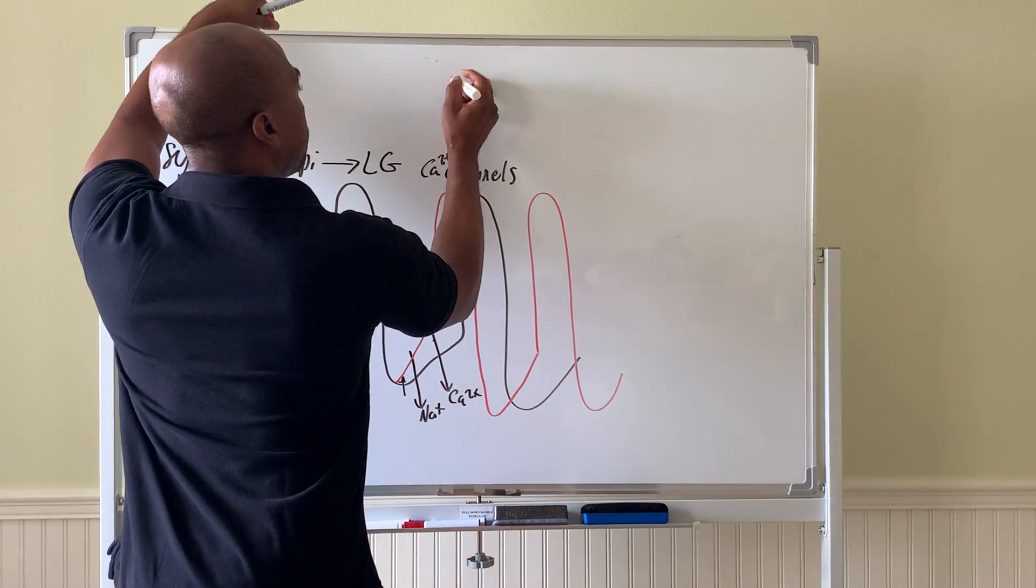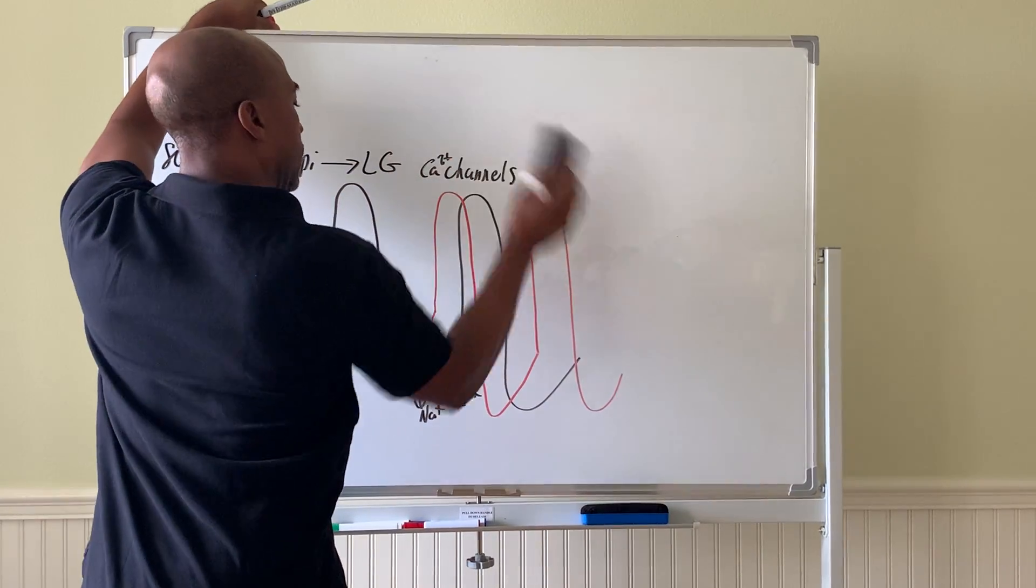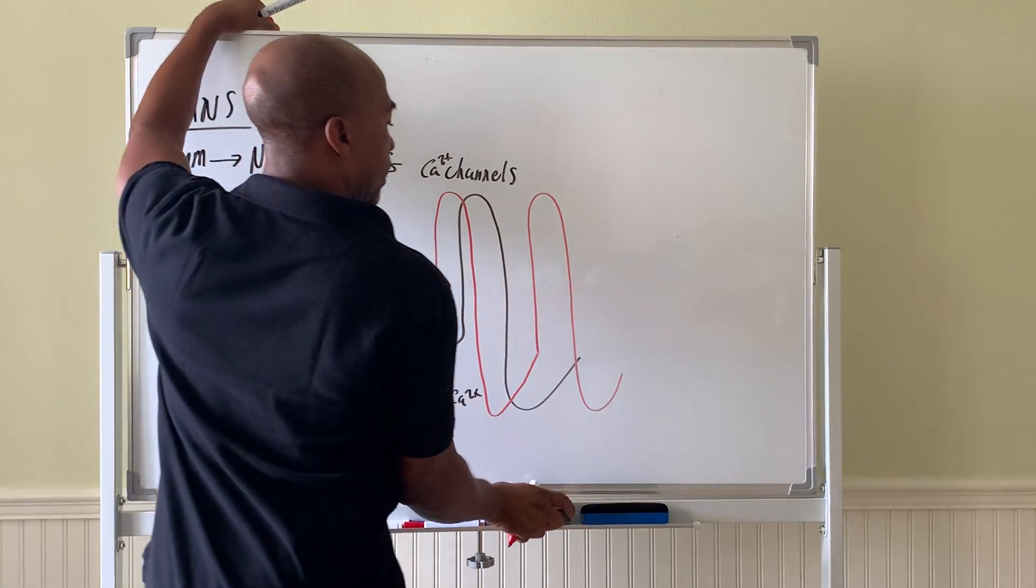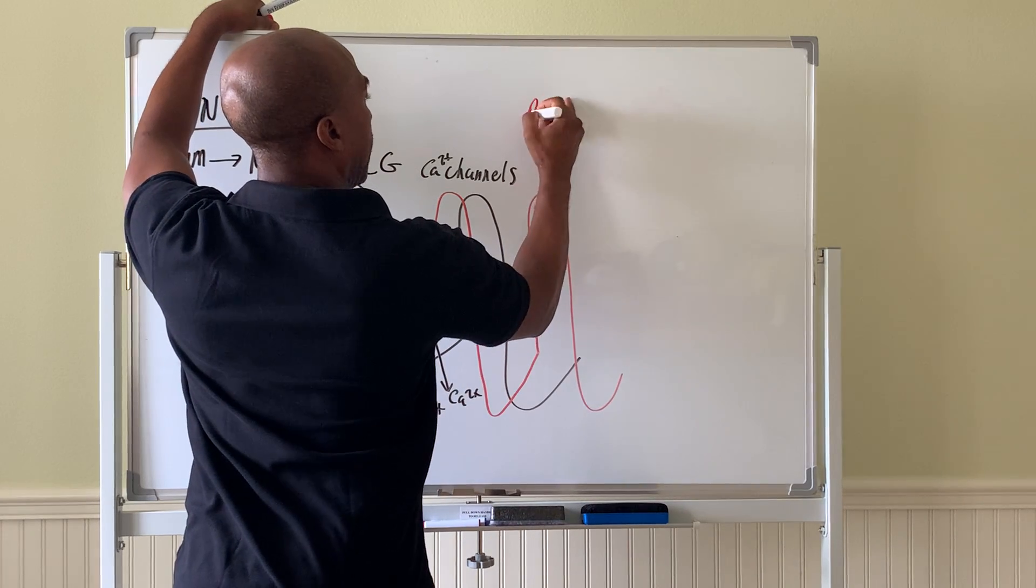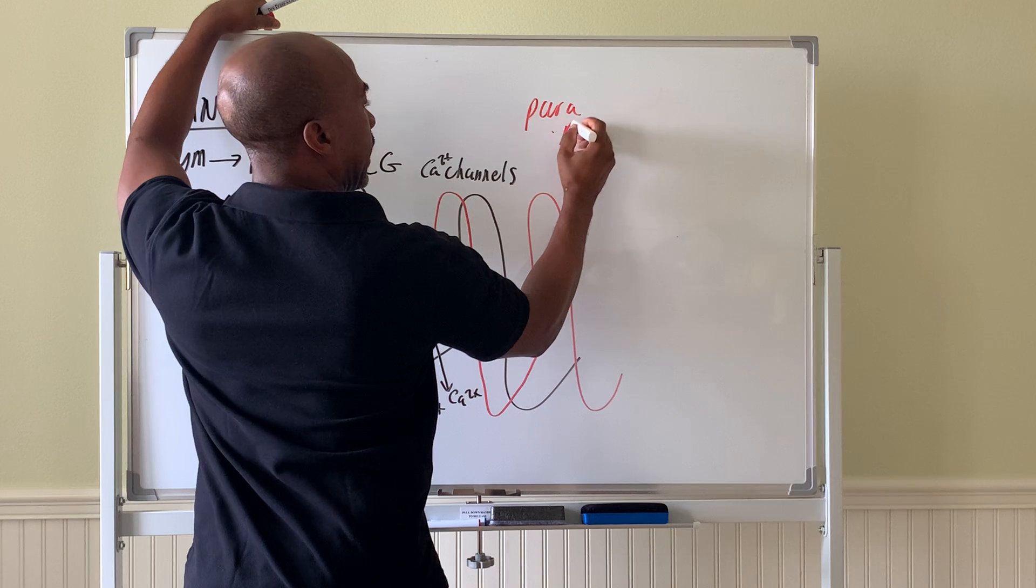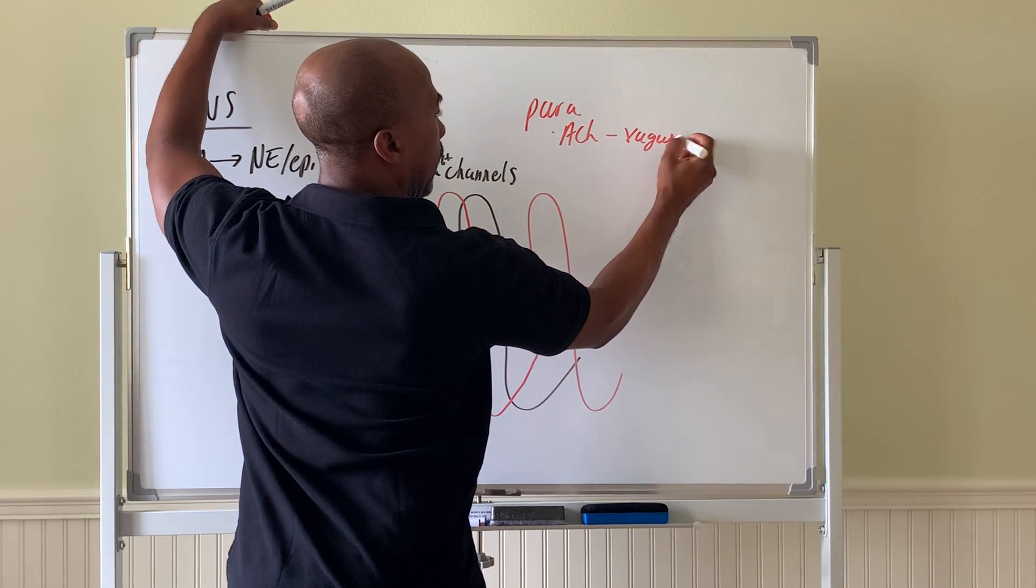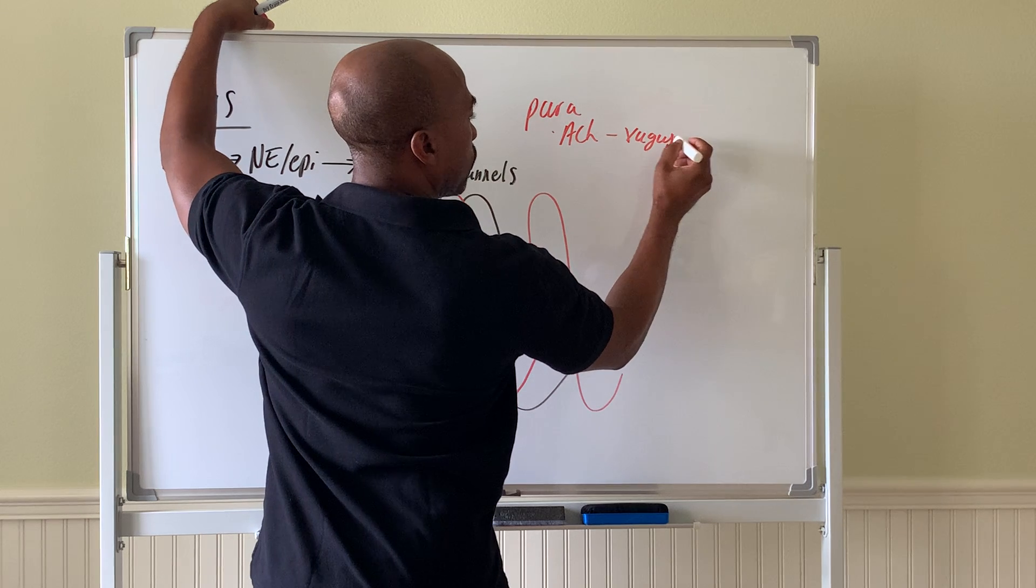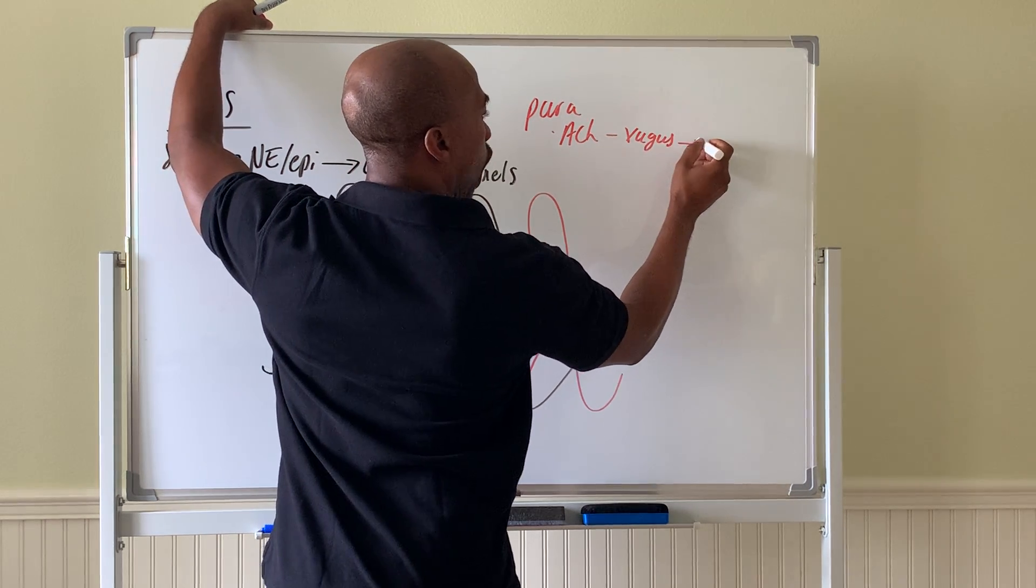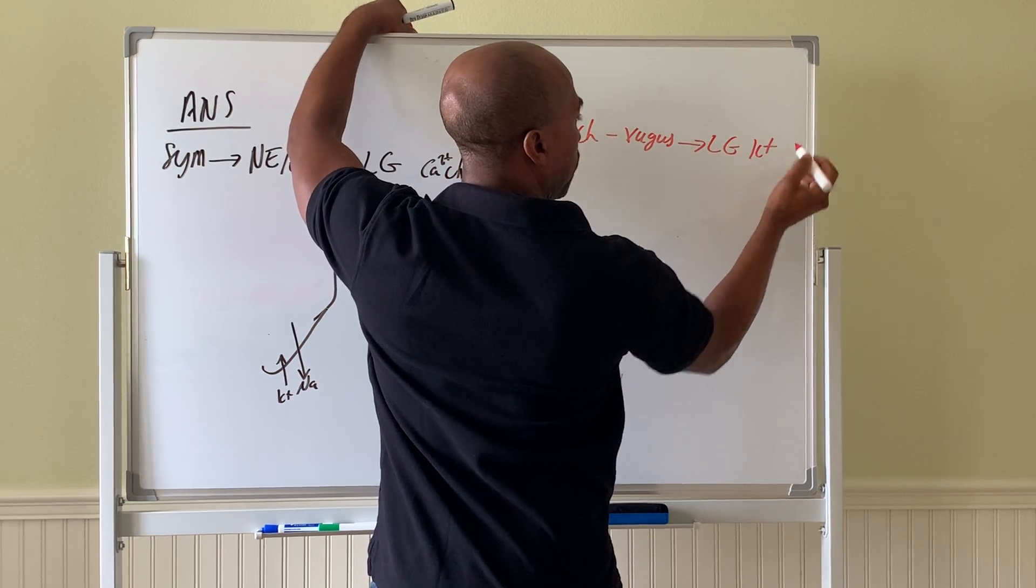Then for the parasympathetic nervous system, a little bit different. Similar idea. So that's the parasympathetic. Here, ACh, of course, is what's released by your vagus nerve. And that nerve, so ACh will open up ligand-gated K⁺ channels.